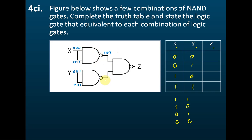This one will be 1, 0, 1, 0. You can try to work it out. But actually, if a NAND gate has its two inputs combined together, then it will act as a NOT gate, where 0 becomes 1 and 1 becomes 0. So 1, 1, 0, 0 becomes 0, 0, 1, 1 and 0, 1, 0, 1 becomes 1, 0, 1, 0.